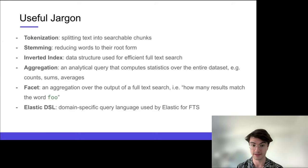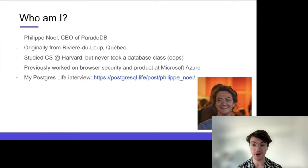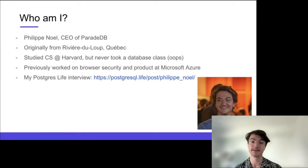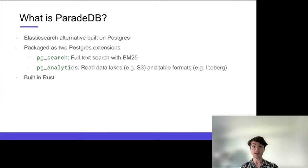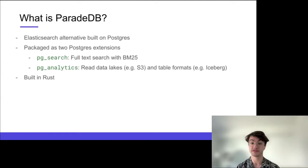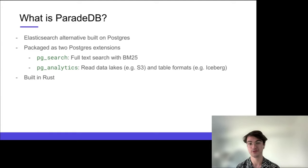My name is Philippe, one of the founders of ParadeDB. I'm originally from Rivière-du-Loup, Quebec — a small French-speaking town in Canada. I studied CS at Harvard but never took a database class. ParadeDB is an Elasticsearch alternative on Postgres. pg_search is our core work: full-text search in Postgres with BM25, built in Rust. We also have work around an extension called pg_analytics, but that's set aside for today.